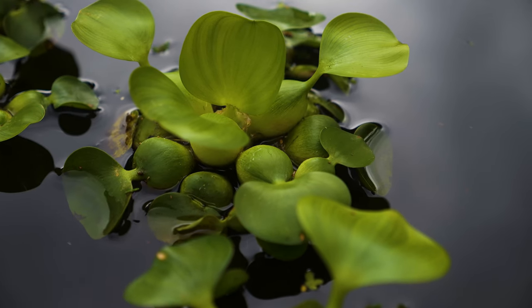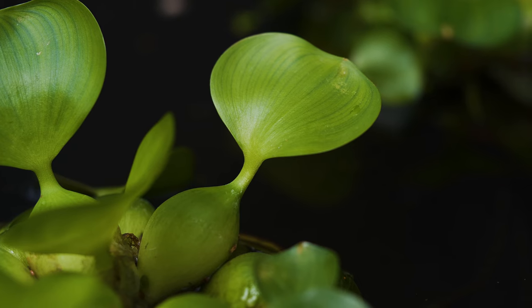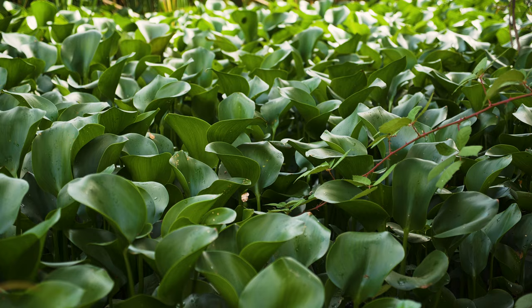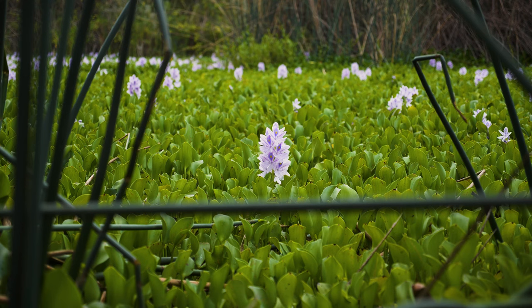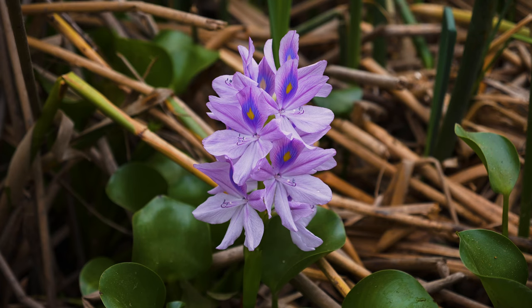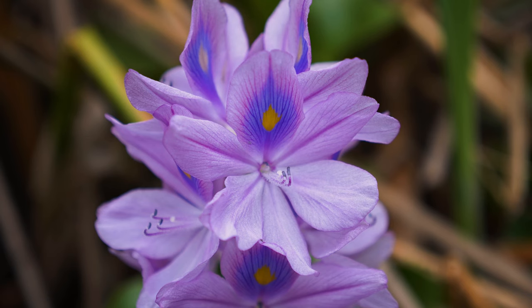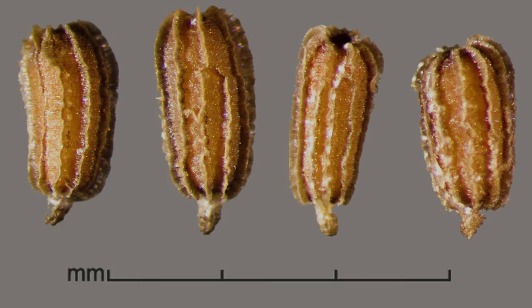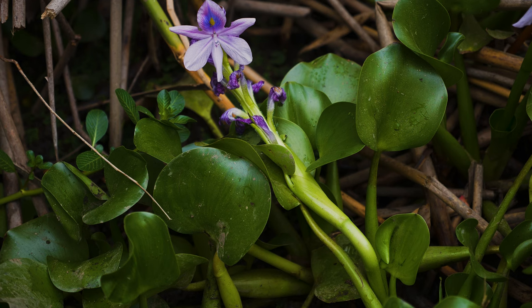Leaves are arranged in rosettes of 6 to 10. Leaf blades are rounded or kidney-shaped, waxy, leathery, and up to 6 inches across. Flowering occurs year-round at warm locations, and from late summer through autumn in cold climates. Flowers usually occur in clusters of 8 to 15 at the end of a single spike. Flowers are 1½ to 2½ inches across and have 6 purplish-blue petals. The top petal has a bright yellow spot.